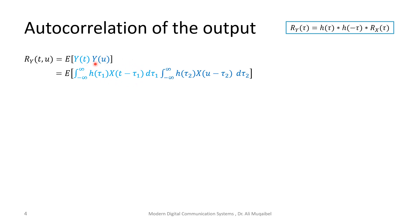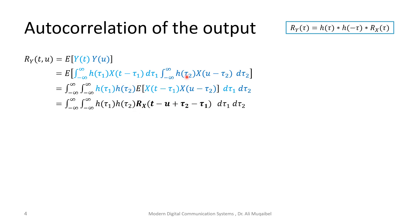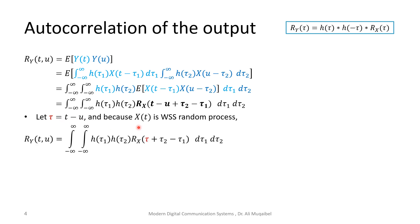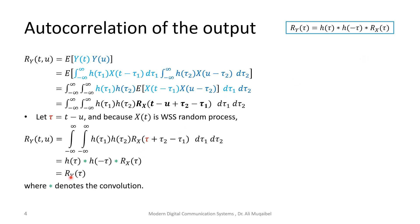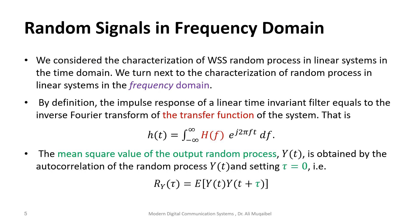We replace the output with its convolution representation in terms of the input and the system. With a bit of reorganization, the only expectation is over the random part, x, since the system itself is not random and goes outside the expectation. That expectation is nothing but the autocorrelation of the input at two different time instances. Redefining t − u as τ and assuming wide-sense stationarity, this reduces to a double convolution process.